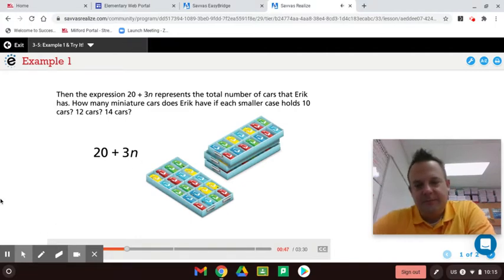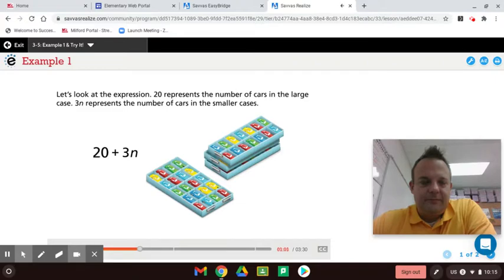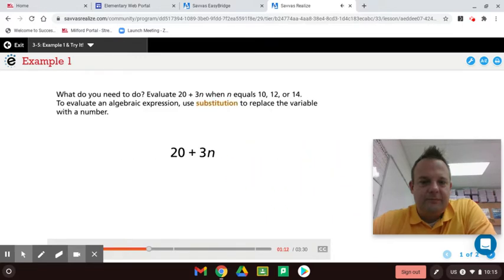The 3 is the coefficient and n is the variable. Cars that Eric has. How many miniature cars does Eric have if each smaller case holds 10 cars? 12 cars? 14 cars? Let's look at the expression. 20 represents the number of cars in the large case. 3n represents the number of cars in the smaller cases. What do you need to do? Evaluate 20 plus 3n when n equals 10, 12, or 14.